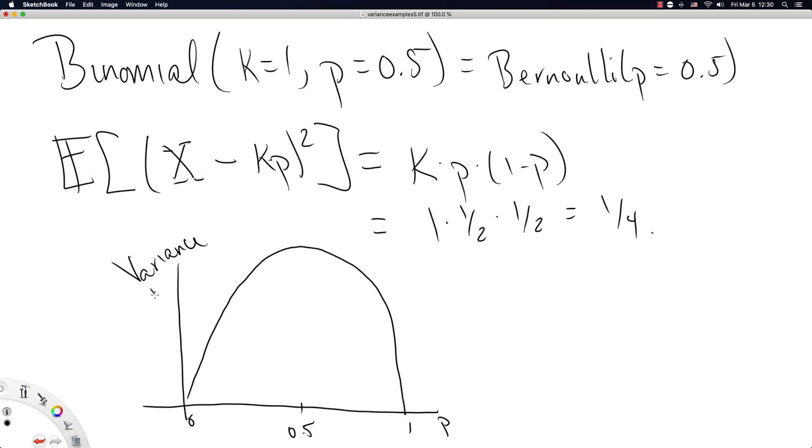So this is specifically for k equal to 1 and p equal to any of these values on the x-axis. p could be 0, you have a coin that always shows tails. p could be 1, you have a coin that always shows heads. Or you have a fair coin with p equal to 0.5. The variance as a function of p is maximized when your coin is fair.